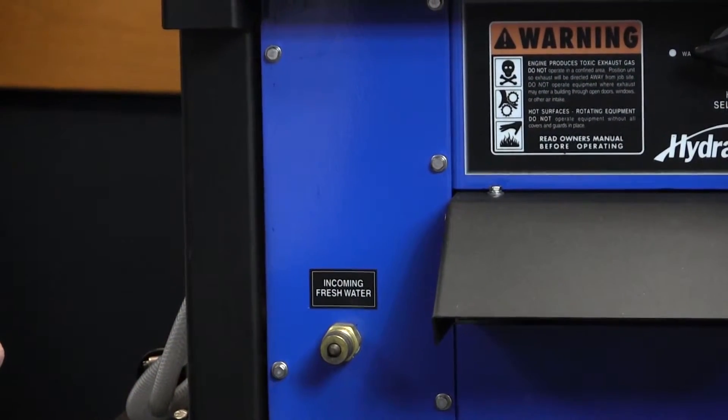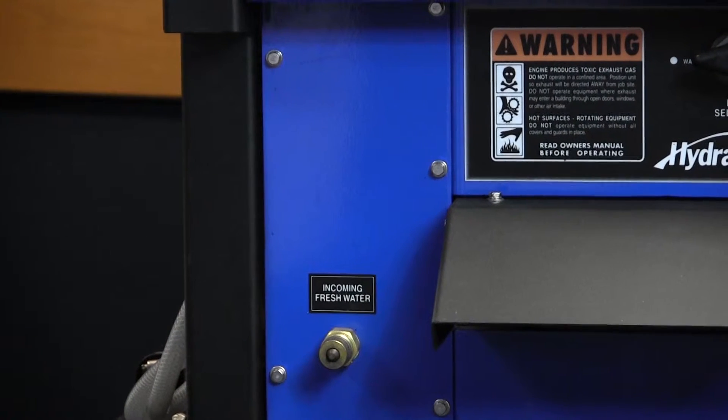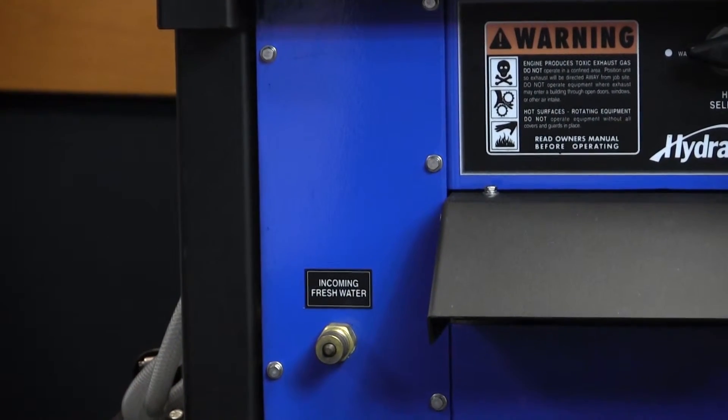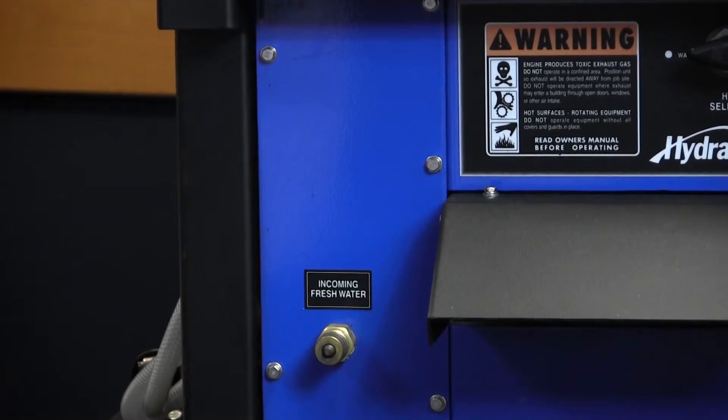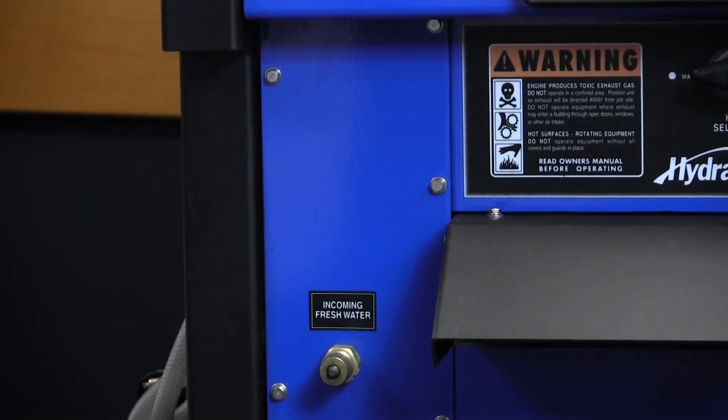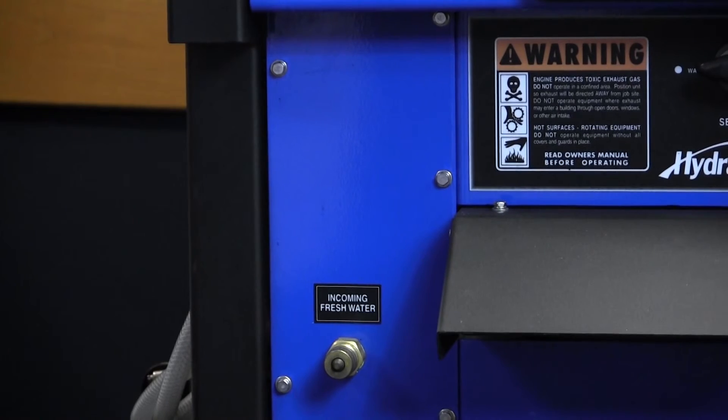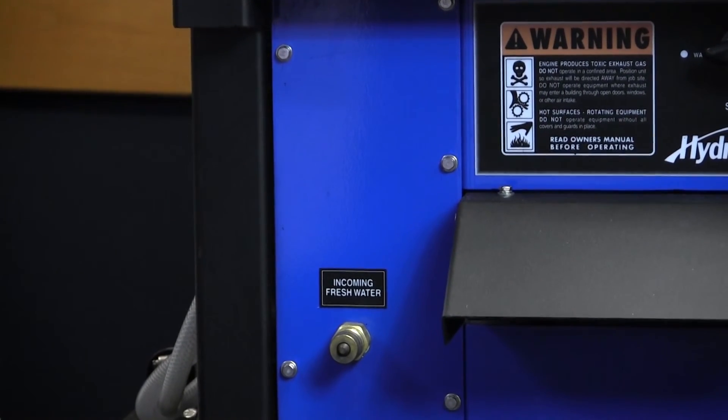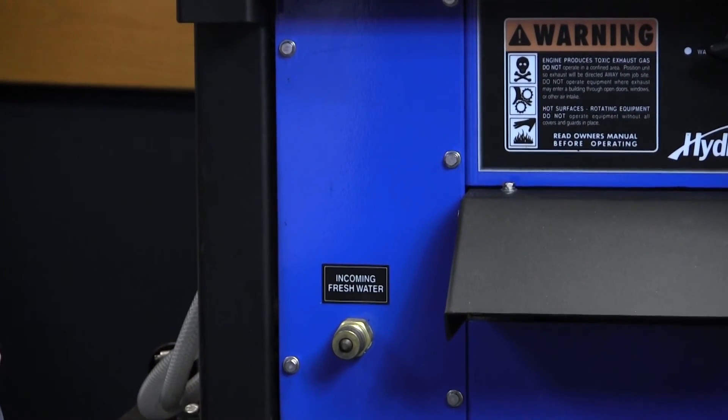The Titan 575 has an option for a pressure washing feature. The pump that comes with the machine has the capability of running 2,000 PSI. However, when in heated mode, to protect the components, this is limited to approximately 1,200 PSI.